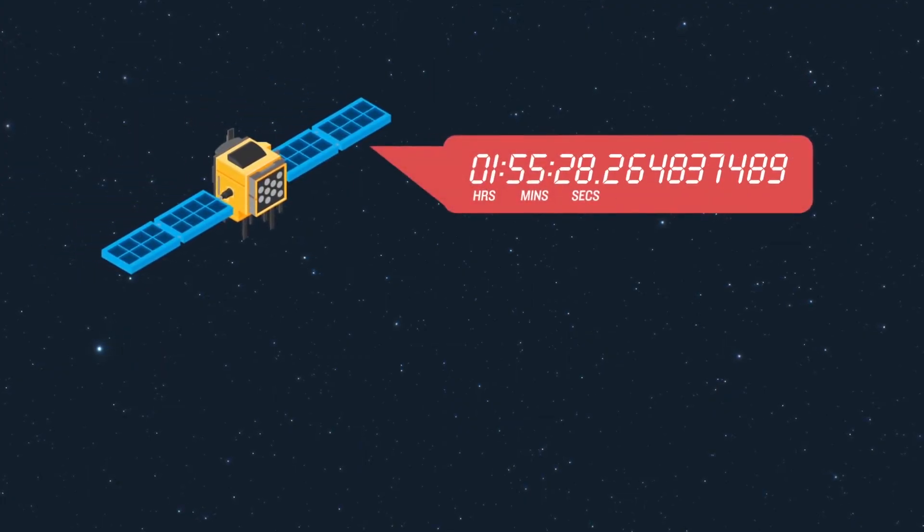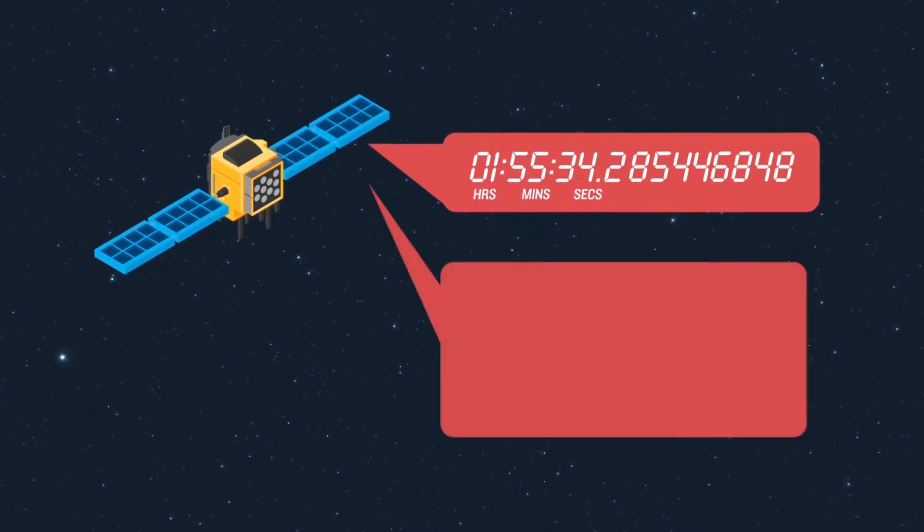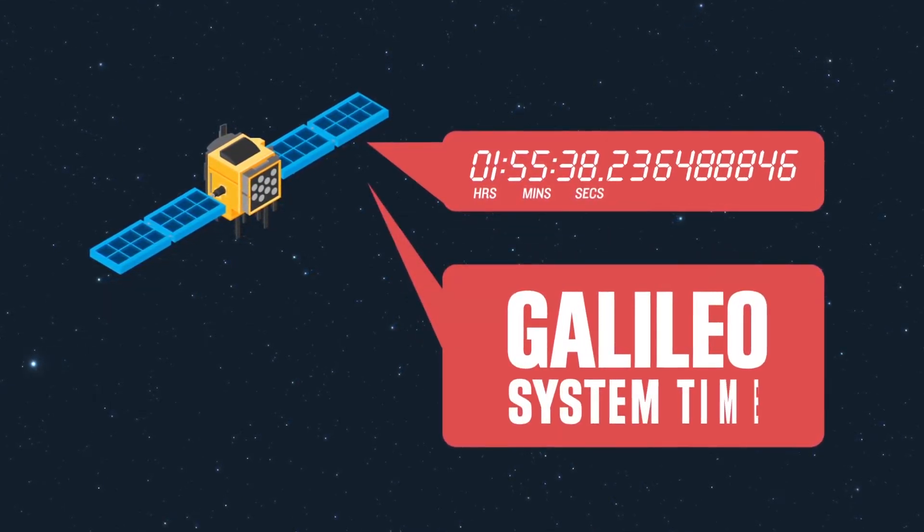GALILEO provides a timepiece that's accurate to around 10 billionths of a second – GALILEO system time.